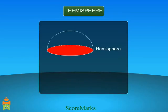A hemisphere is half a sphere with one flat circular face and one bowl-shaped face. Volume of a hemisphere equals 1/2 × 4/3 πr³, which equals 2/3 πr³, where r is the radius.